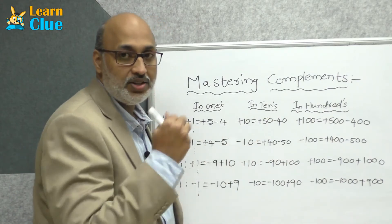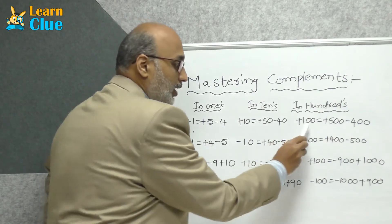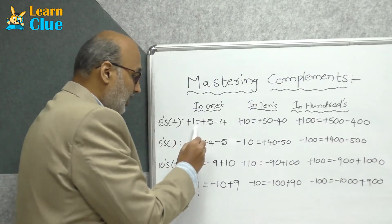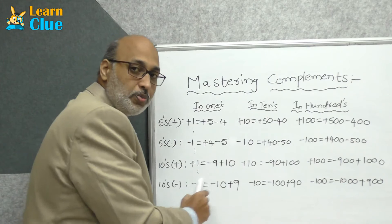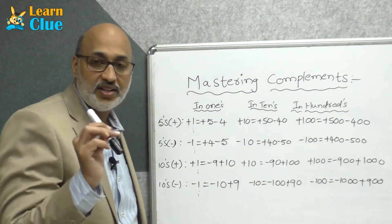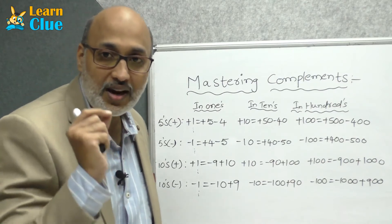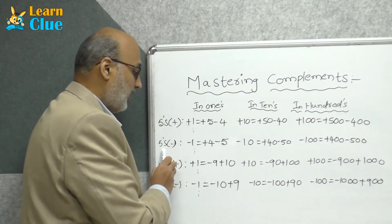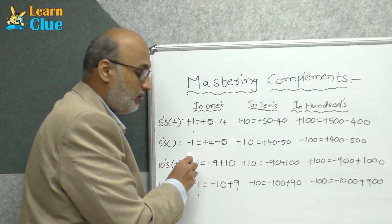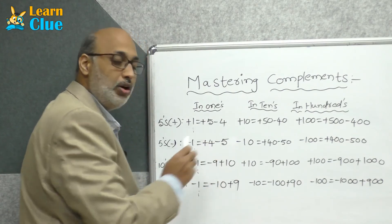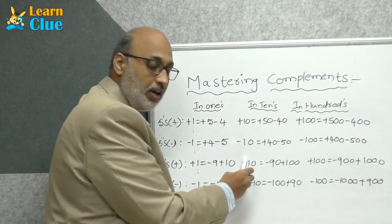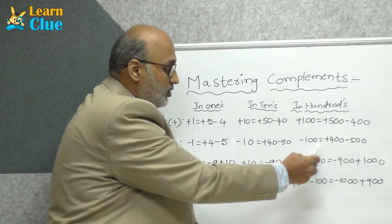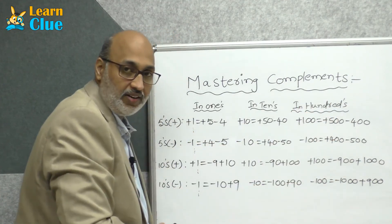If the same technique is applied in hundreds place, there are three digits, so: +100 = +500 − 400. Likewise, the techniques differ from ones to tens to hundreds place by just adding one zero. Similarly, in fives complement subtraction, the technique in ones place is: −1 = +4 − 5. In tens place it becomes: −10 = +40 − 50, and in hundreds place: −100 = +400 − 500.